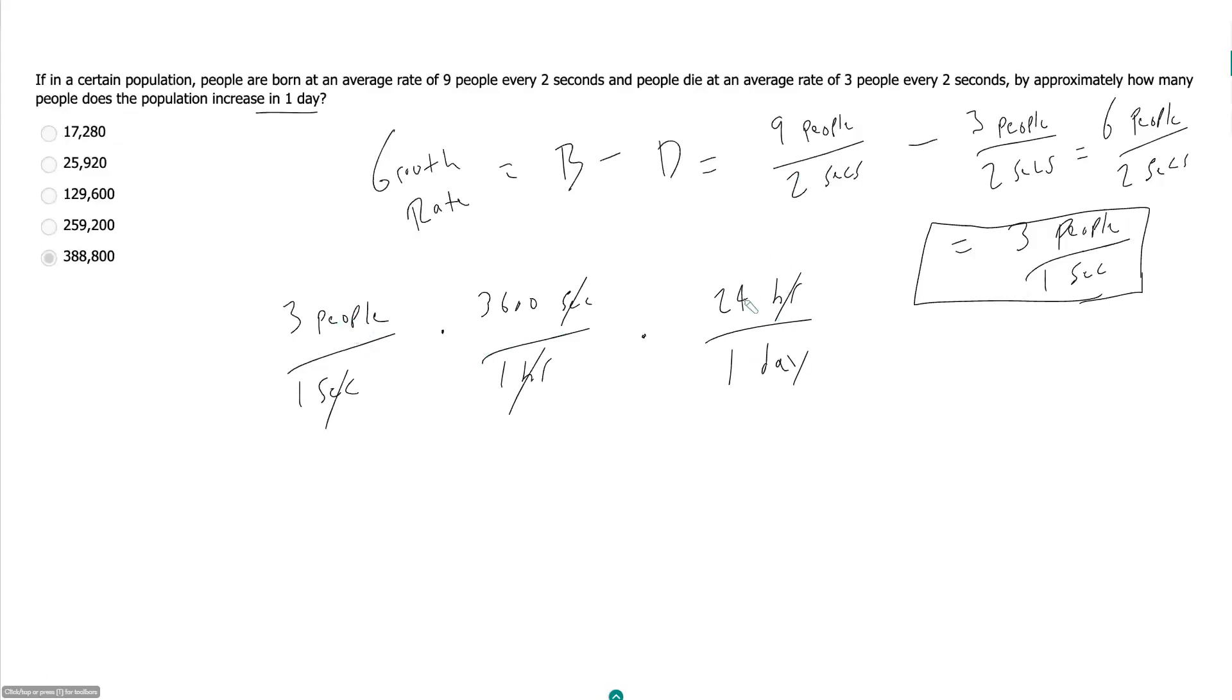And so those people will be 3 times 24 times 3,600. So 24 times 3 is 72. What's 36 times 72, and then I'm going to add two zeros to that? 2 times 6 is 12, put the one up here. 6 times 7 is 42, plus 1 is 43. 3 times 2 is 6. 3 times 7 is 21. 6 plus 3 is 9, not 8. So 2, 5, 9, 2 with two zeros added.